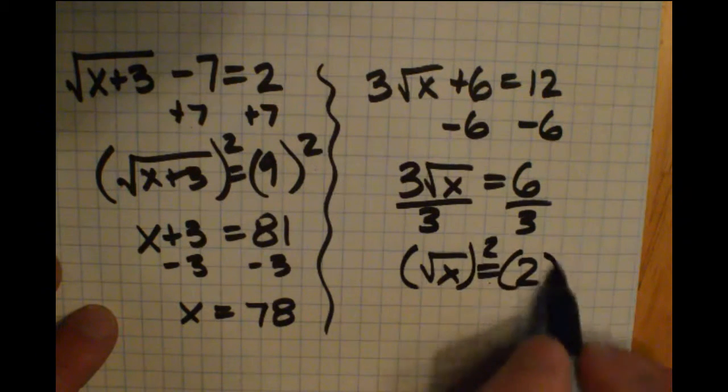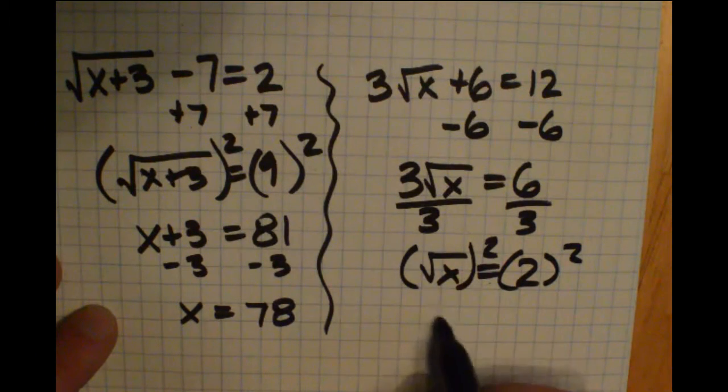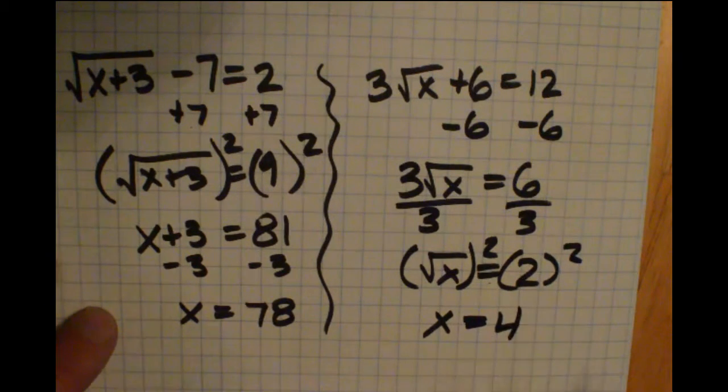Inverse of that radical is to square both sides. And that cancels the radical. I get x equals 2 squared is 4.